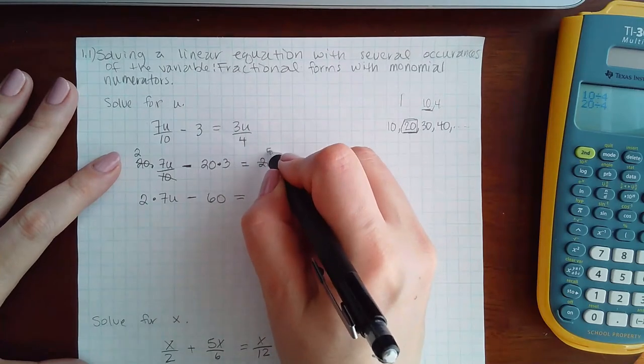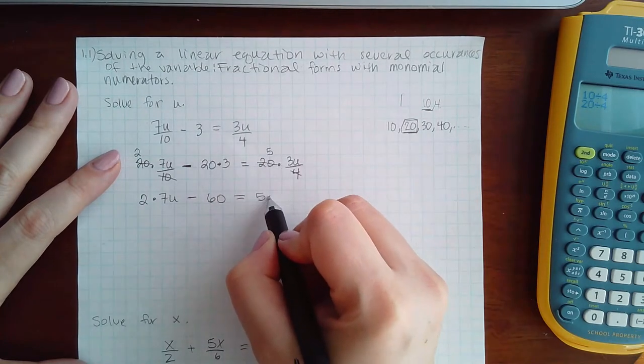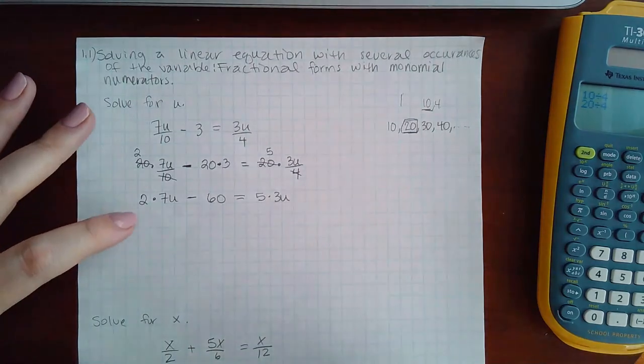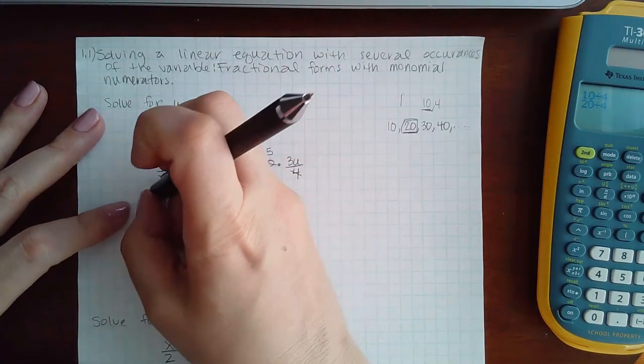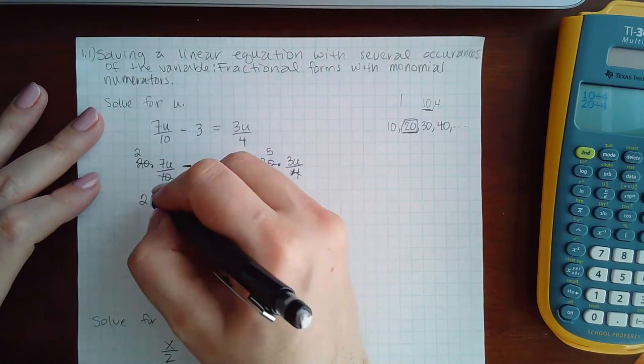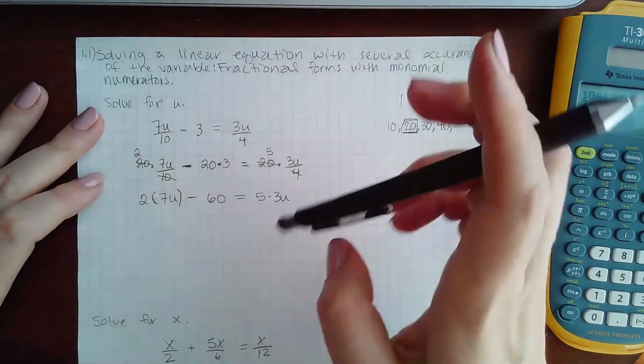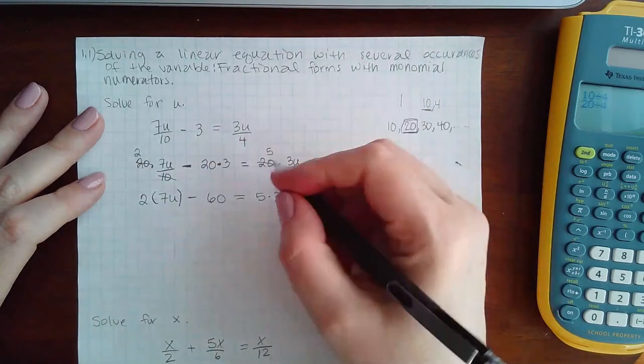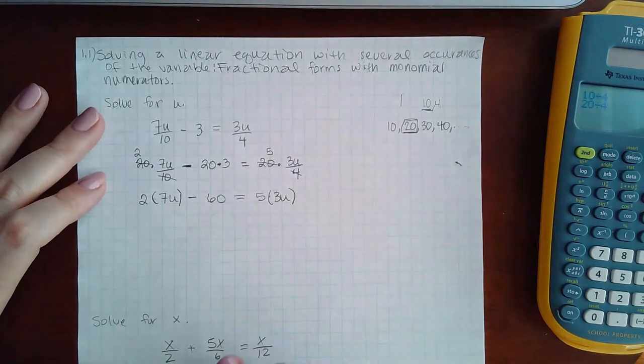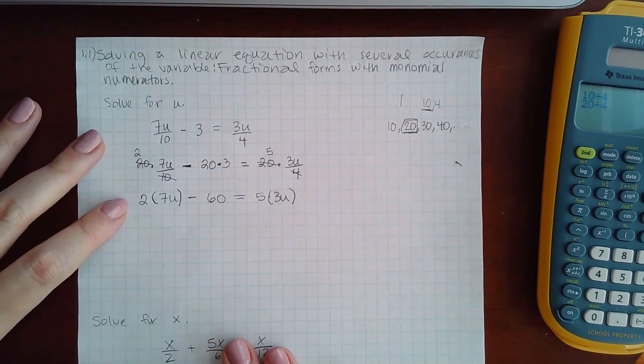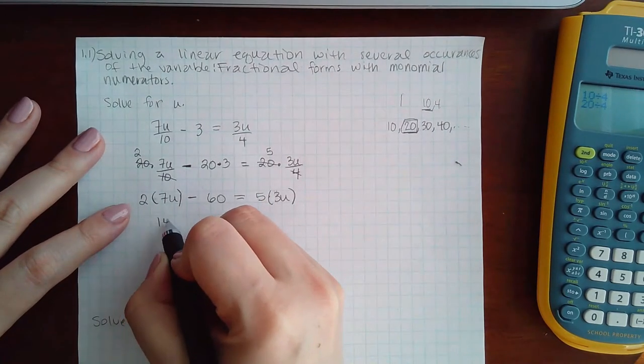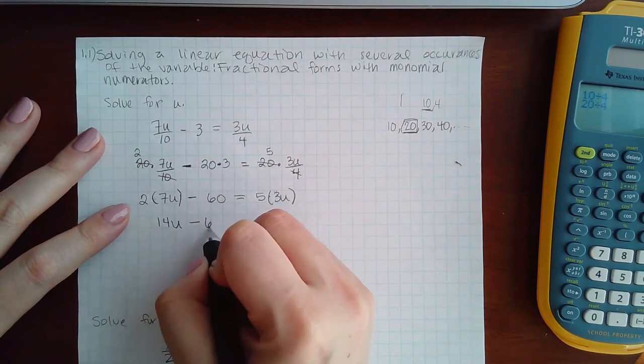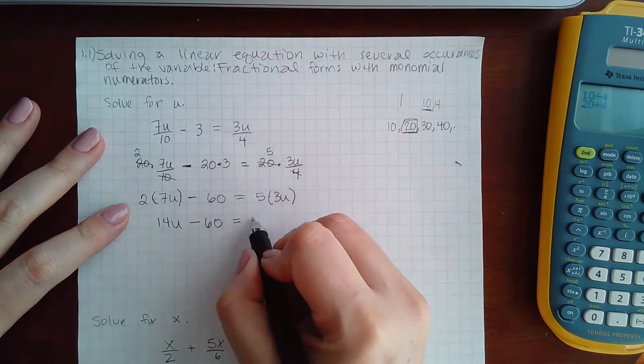Here I have 20 times 3, which is 60. Here 4 will go into 20 five times, and I end up with 5 times 3u. Now I do like to, instead of using the dot, because later on you might have more than just one term, it might be best to get into the habit of using parentheses instead of the dot. And I'll show you how to do that in the next example from the beginning.